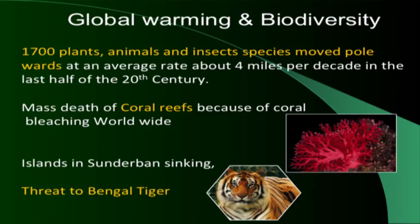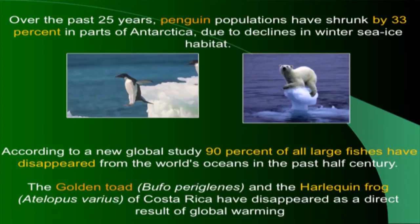Species are moving poleward because of rising temperatures. There has been mass death of coral reefs due to temperature rise and pollution. Many people still debate whether global warming is real, even as the Lohachara island in the Sundarbans has disappeared and many islands are going underwater. Penguin populations have shrunk because ice is melting in Antarctica. Ninety percent of large fishes have disappeared. The golden toad in Costa Rica has gone extinct directly due to global warming.